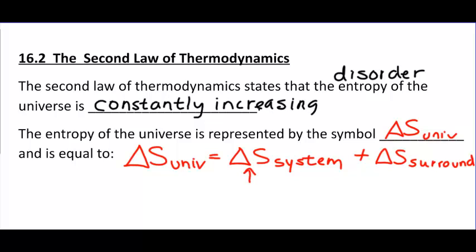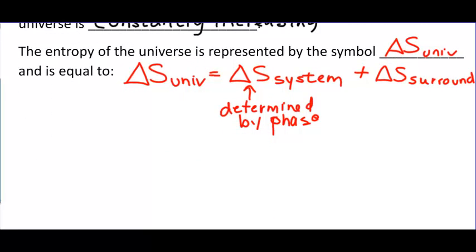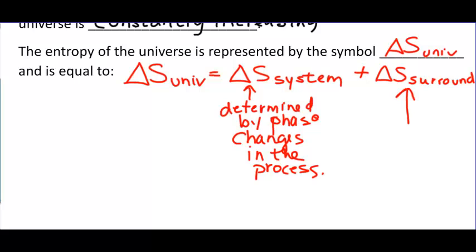Delta S of the surroundings is not determined by phase changes — it's determined by heat gained and lost. So really, if a reaction is endo- or exothermic, that determines delta S of the surroundings.